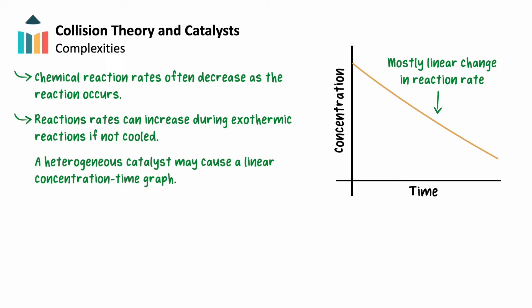This kind of graph may occur with a heterogeneous catalyst. The solid surface of the catalyst may be saturated with reactant so no more molecules can bind. Since the surface area of the catalyst is constant, it catalyzes reactions at a constant rate until so much reactant is used up that saturation of the surface is no longer possible.